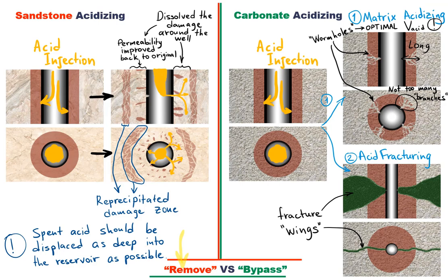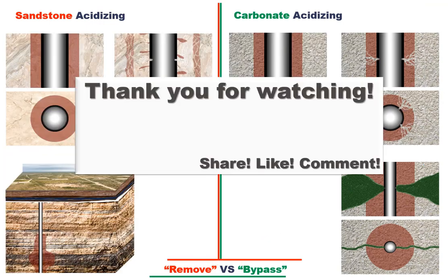So, to summarize, the primary difference between sandstone and carbonate acidizing is that in sandstone reservoirs, our objective is to remove the damaging material, while in carbonates we bypass the damaged region. Thank you for watching. Please share with your colleagues and let me know what you think in the comment section. Have a great day.